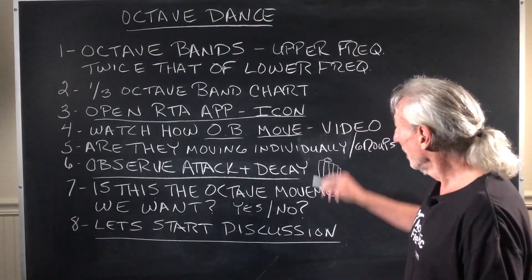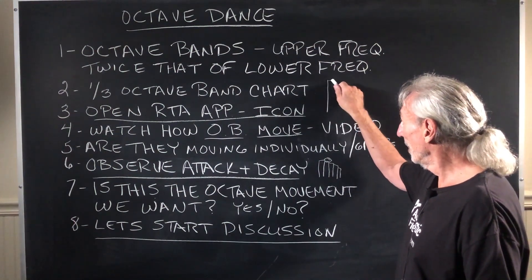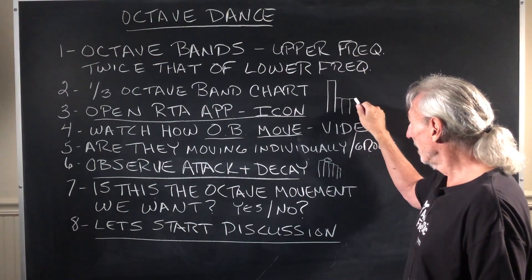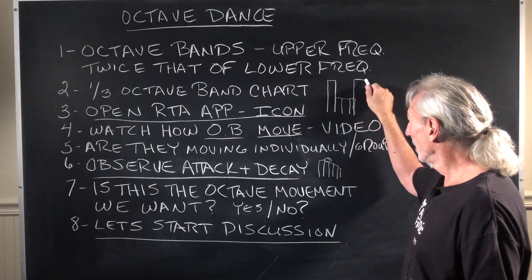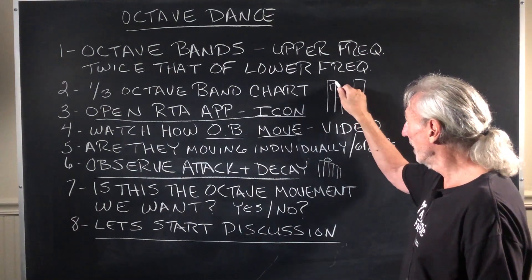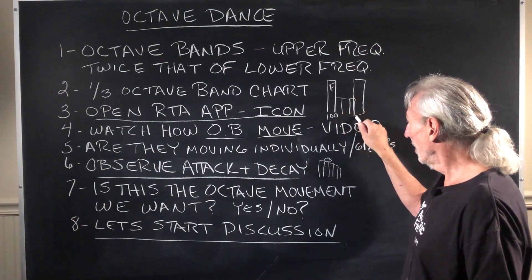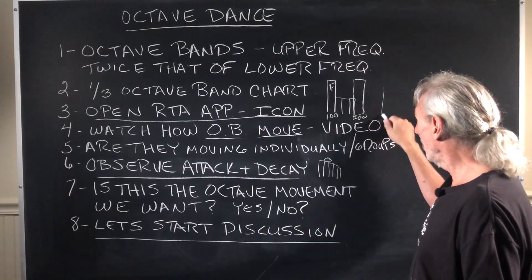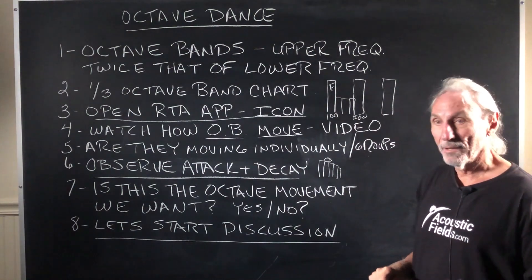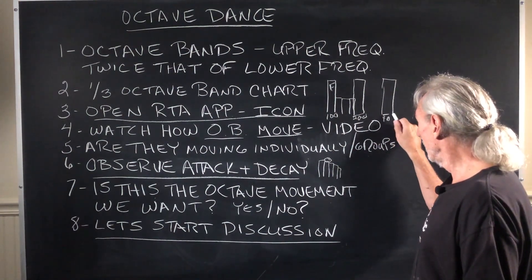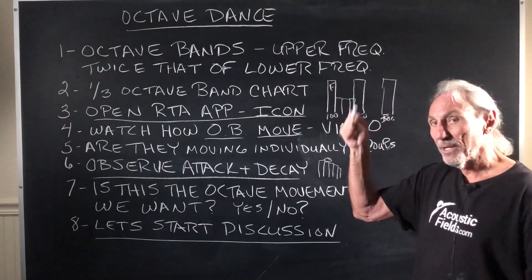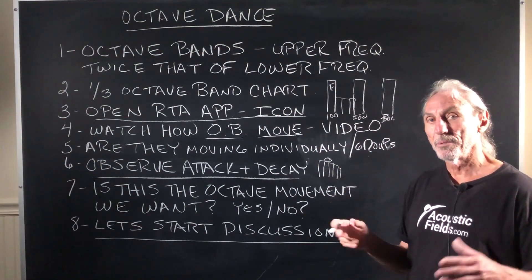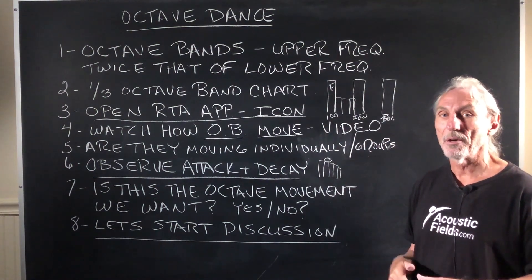One other thing to look for is the modes — those are the ones that hang around when everybody else is quiet. You can see them, then look to their harmonic. If this is the fundamental, let's say at 100, the harmonic is going to be 200. Look at that relationship. You can carry that all the way through the RTA: 400 — sorry, 300. Carry it all the way through and get a feel for what your room looks like on the RTA.